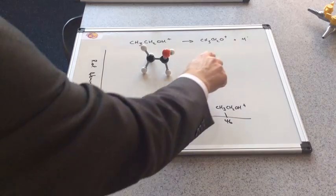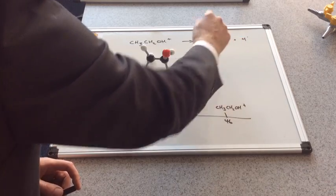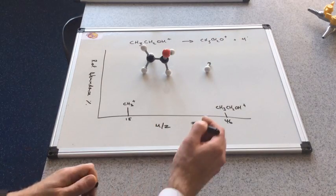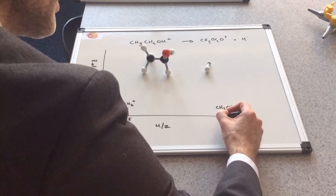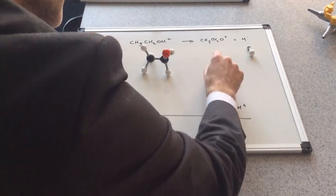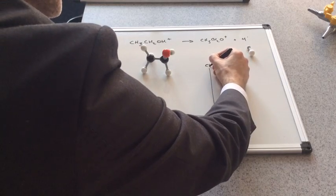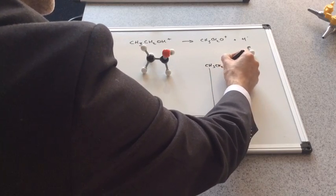And so this is what is detected. That's got a mass of one less than the original molecule, so we would see another peak at 45. And that's due to this fragment, CH3CH2O+.